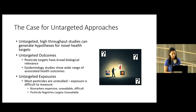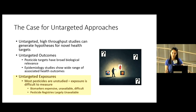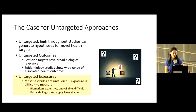One of the reasons most pesticides are understudied is because exposure is really difficult to measure. Historically, we use biomarkers to study pesticide exposure, but these are expensive, unavailable for the vast majority of pesticides, and difficult to develop in the lab. So we can't use an untargeted approach with a biomarker-based method, because we simply can't know the full extent of pesticides that somebody is exposed to.